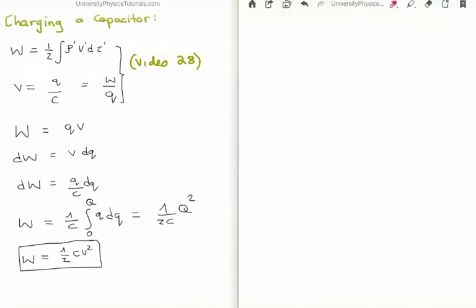So what work must be done in order to do this? Well, we know that the work done to assemble a group of charges was covered in video 28. The most important equation there was that the work done was equal to one half outside of the integral of the surface or the volume charge density multiplied by the electric potential integrated d tau. So we have here that the potential is equal to the charge divided by the capacitance.